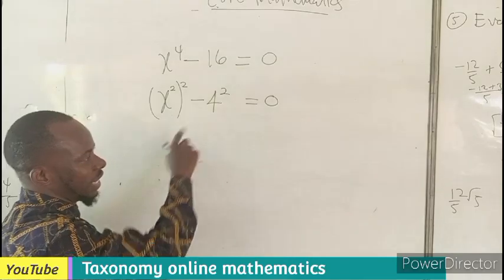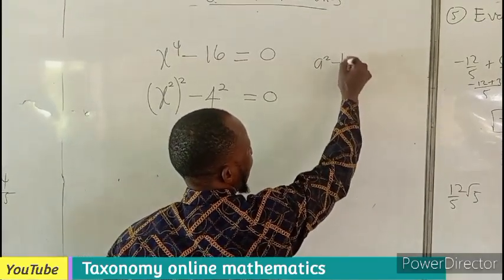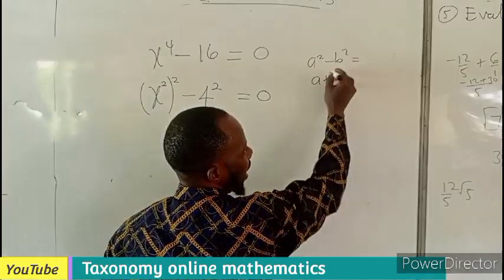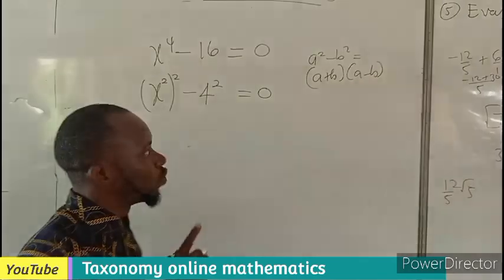So I am going to work this as a squared minus b squared, which is what? a plus b, a minus b, difference of two squared.